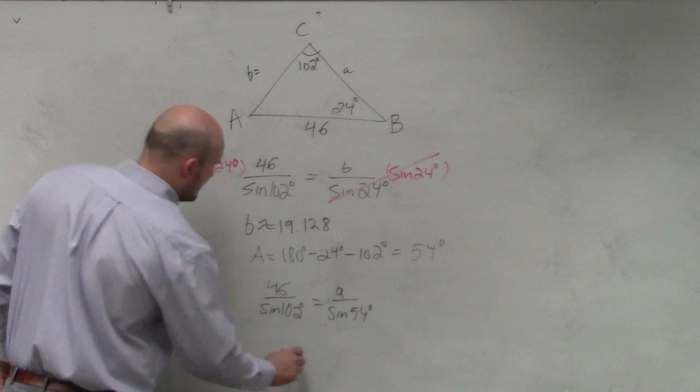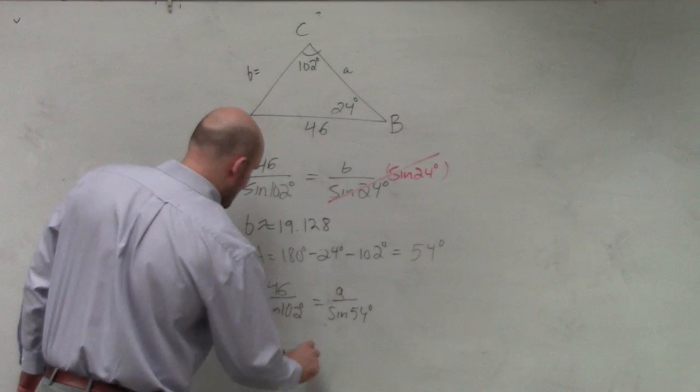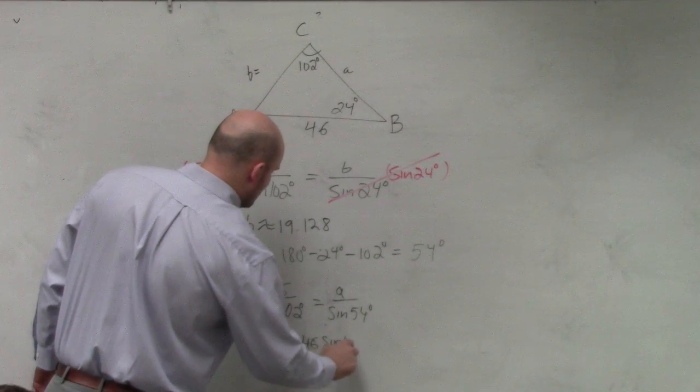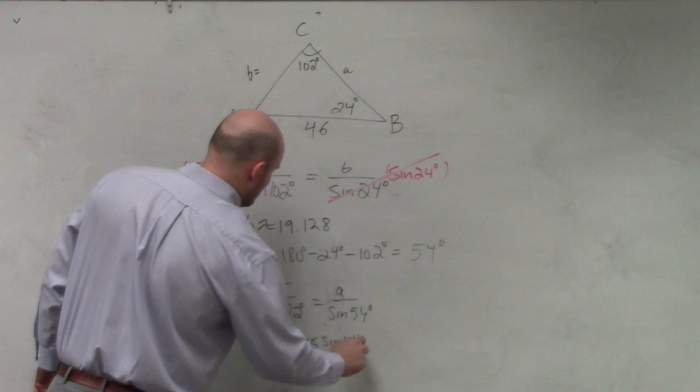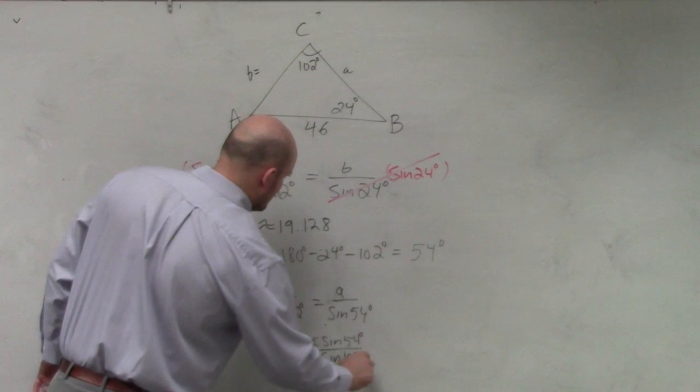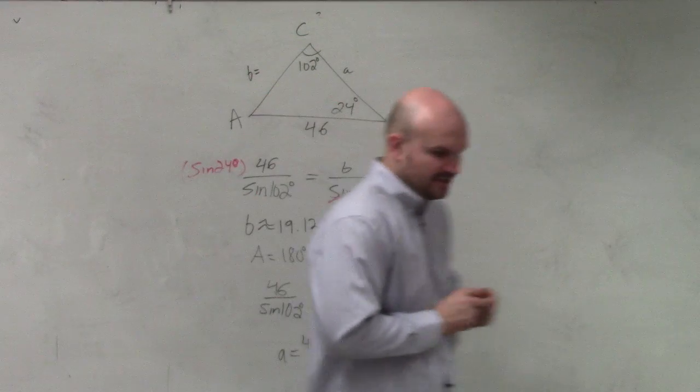And then, if you guys understand the math again correctly, A equals—or you could write it like this, because 46 times the sine of 54 degrees, doesn't really matter what order you multiply them in, divided by the sine of 102 degrees.